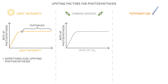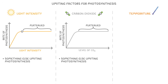We can draw a similar graph for carbon dioxide. As carbon dioxide is one of the reactants for photosynthesis, the more of it a plant can get, the higher the rate. But just like light, after a while it plateaus, because when carbon dioxide is plentiful, something else will become the limiting factor.